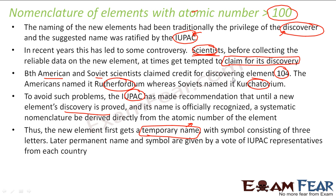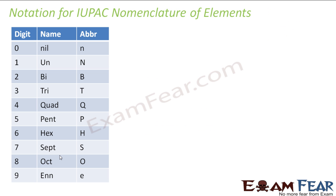A proposal is then made to the IUPAC committee, which has representatives from all countries. They decide whether the discovery is correct and can go ahead with the name. They then give the final name to that particular element, based on maybe the scientist who discovered it or the lab which was used. For example, let's look at the convention.